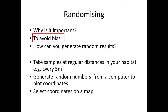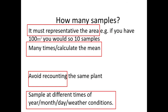You could also select coordinates on a map randomly. How many samples do you use? It must be representative of the population and of the area you're sampling. For example, if you did 100 metres squared, you'd do 10 samples. In stratified sampling, which we'll come to in a bit, you need to make sure you're doing a representative area — for example, 10% of each area that you're sampling.